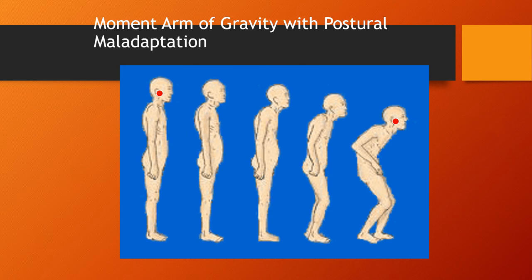This series of drawings illustrates what happens with an increasing moment arm of gravity. The drawing on the far left represents a young man whose center of mass goes straight down from his head through his trunk to his feet, so the external moment arm of trunk flexion is not very great. However, as the man gets very old, the center of mass is way forward of the axis of rotation of the trunk. He has developed a very large external moment arm of trunk flexion — exactly what he does not need, for reasons we'll explore over the course of the semester.